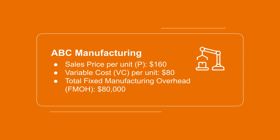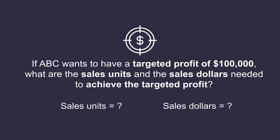ABC Manufacturing Company has the following price and cost structure: sales price per unit is $160, variable cost is $80, and fixed manufacturing overhead is $80,000. If ABC wants to have a target profit of $100,000, what are the sales units and the sales dollars needed to achieve the targeted profit?